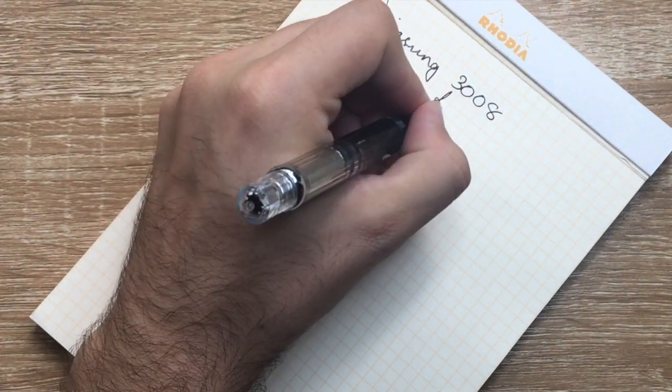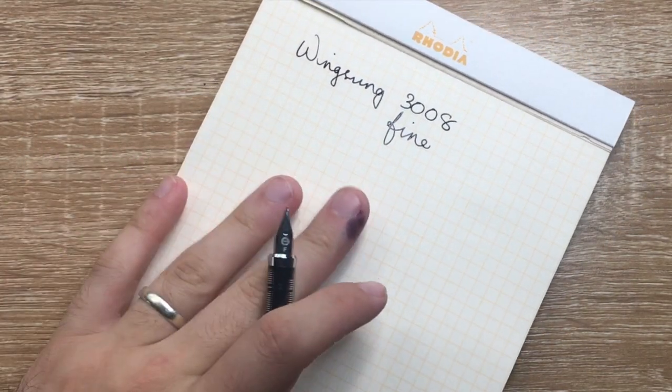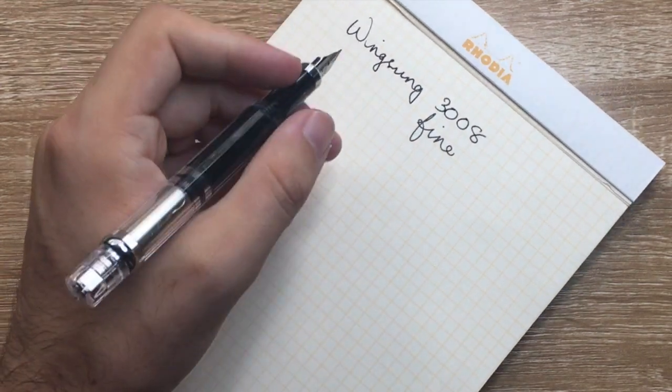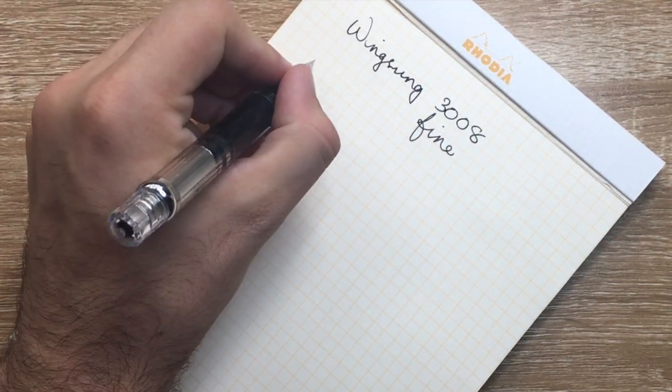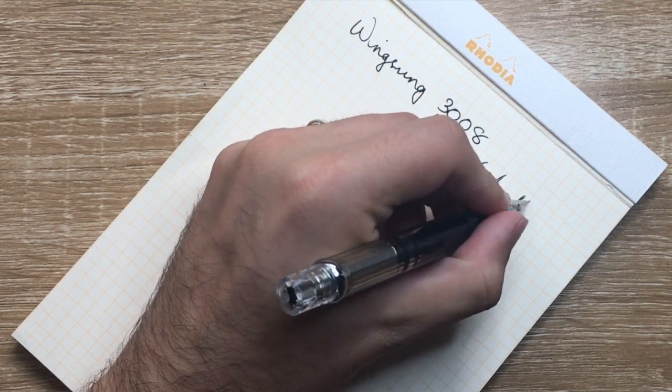So we have the Wingsung 3008 and this is a fine nib. This is a Rhodia paper here. This is from the Heritage line. It's 80 gram grid. Five millimeter grid paper. And as I said here it's definitely a steel nib.